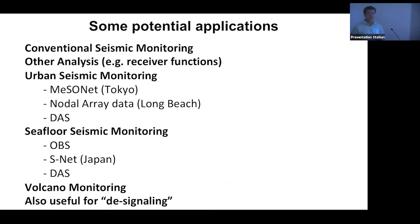This has a lot of potential applications because all of our data is noisy, and it's probably most helpful for the noisiest data — urban seismic monitoring, seafloor seismic monitoring, monitoring near volcanoes. And sometimes we want to get rid of earthquake signals, so we can do de-signaling if we want to do ambient field correlations.